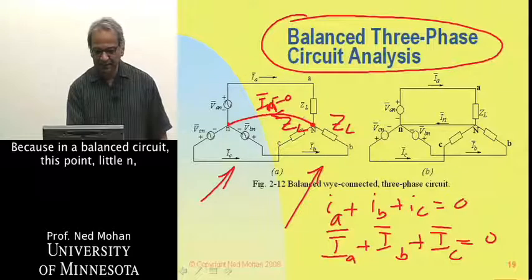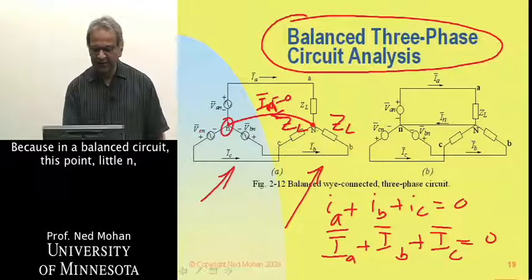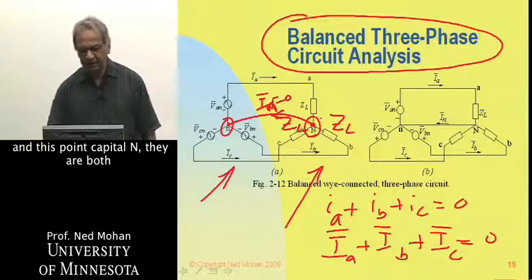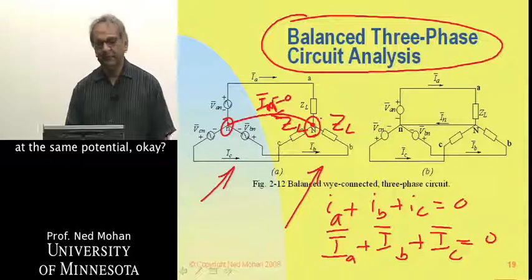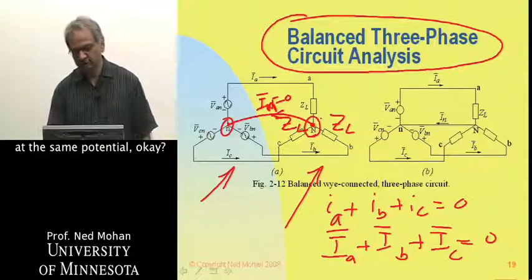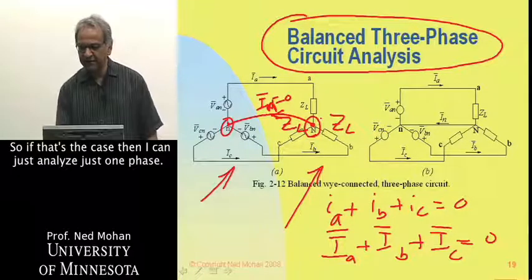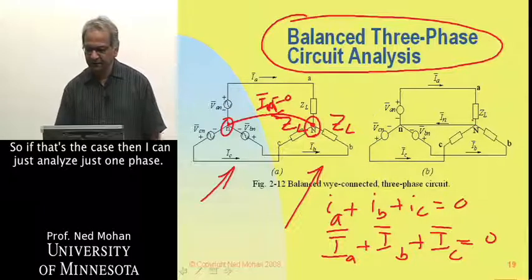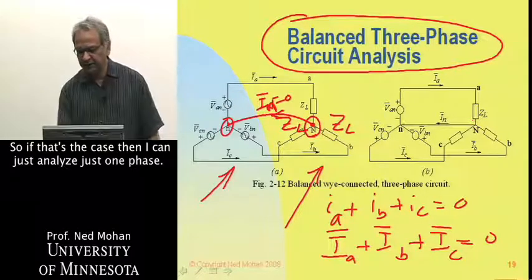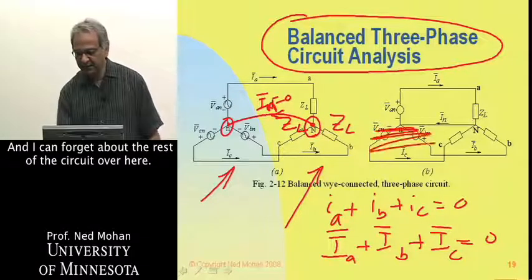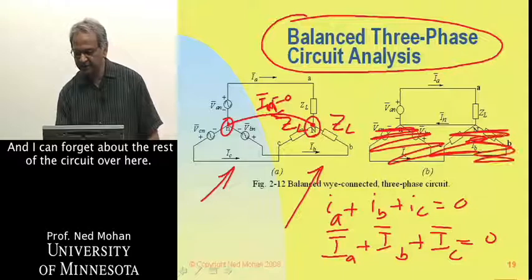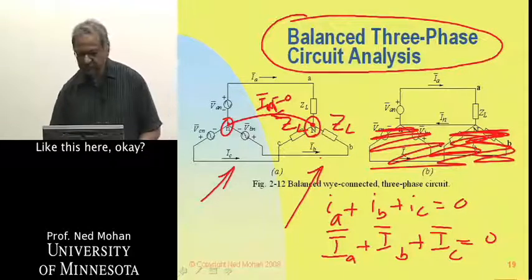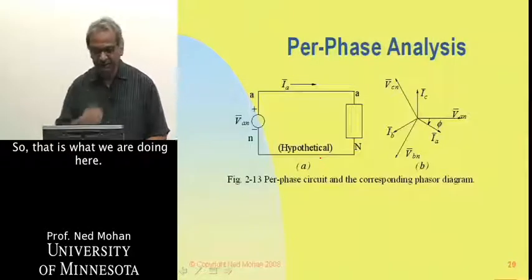In a balanced circuit, this point — little n — and this point — capital N — are both at the same potential. So if that's the case, I can just analyze one phase and figure out the rest of the circuit over here.